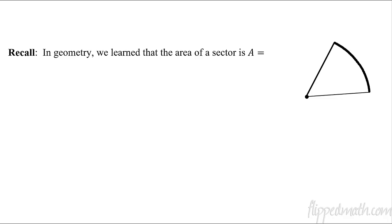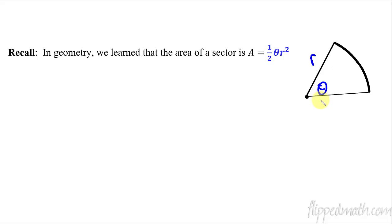Before we jump into it, let's remember something we learned in geometry — the area of a sector of a circle. If you took a circle and just took a little piece of pie out of it, a little slice, the area is one-half theta r squared, where theta is the central angle from the center of your circle and r is just the radius. If you remember that, today's lesson is basically what we're doing — we're just going to throw in some calculus. The shapes we're going to look at are not just slices of a circle; if it was that, we wouldn't even need the calculus.